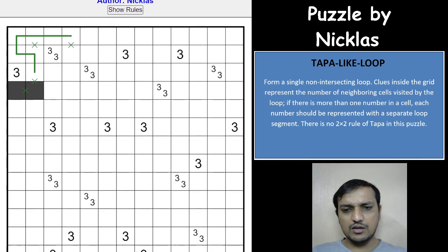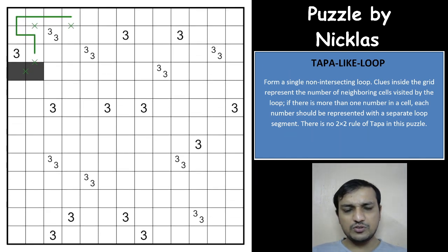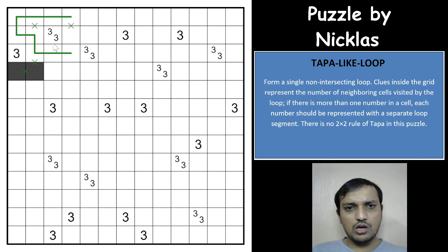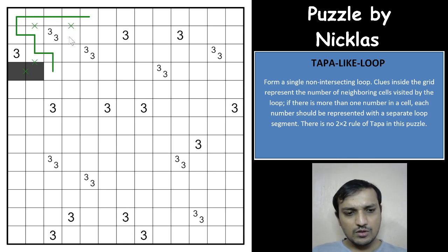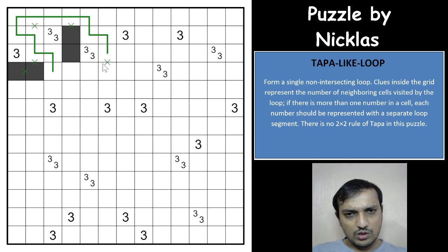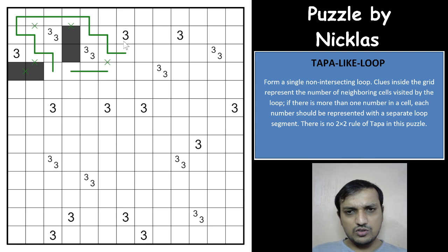Using line and line helper — the loop will have to fulfill the 3 clue here. If the loop goes up, you will have 4 cells used by a single loop segment instead of 3, so the loop cannot go up, and even this 3 clue would be contradicted. So these cells are unused, which means all of these cells will be used for this 3 clue. This 3 clue is now fulfilled.